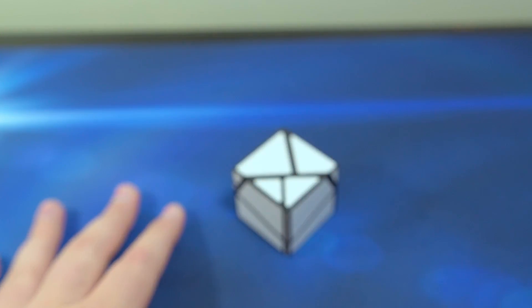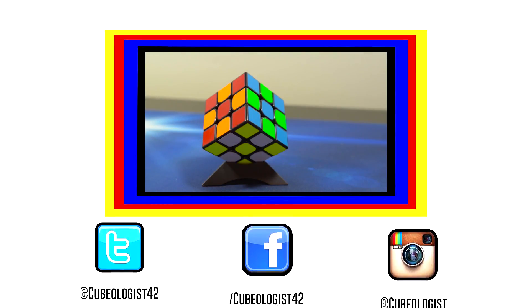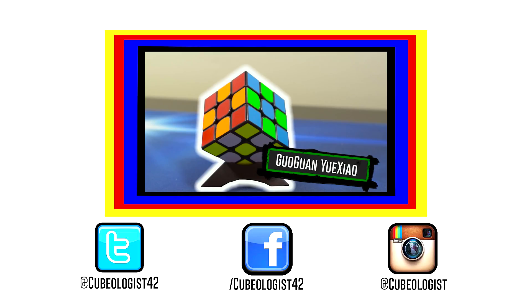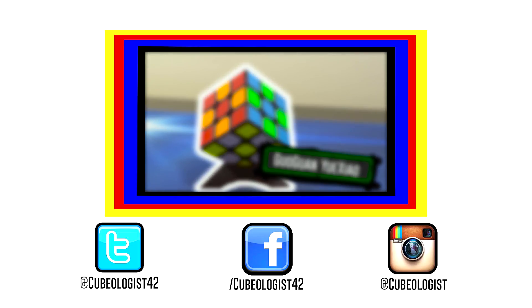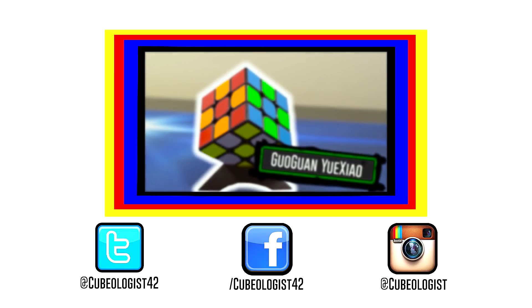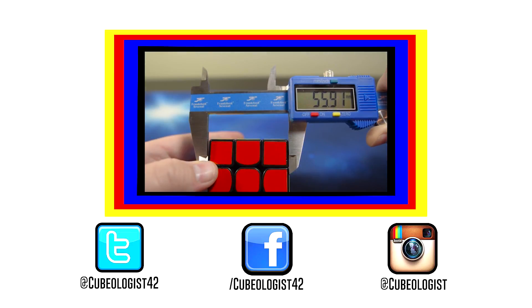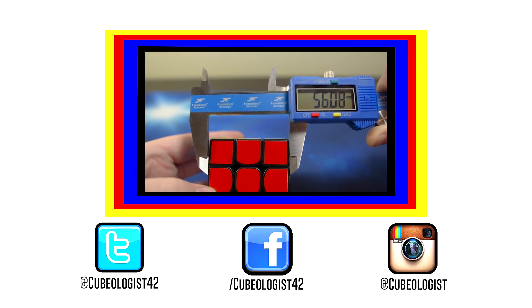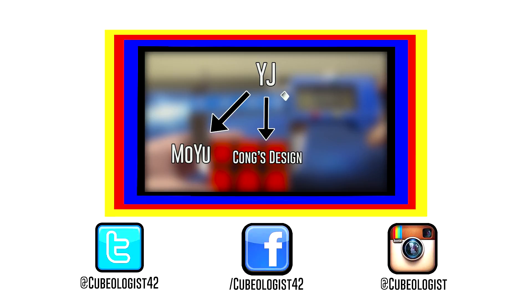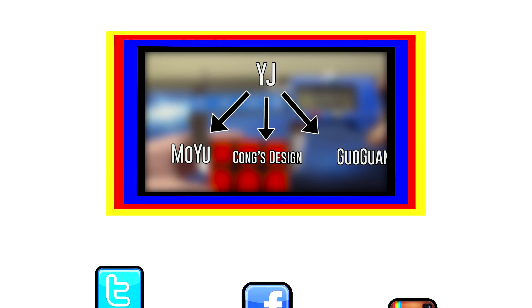Today we're going to be talking about the new Guoguan Yuishiao. But first, a big thank you to Cubes for Speed for sending this over. If you want your puzzles at a good price with extremely fast shipping, definitely go check them out. This is a new 56 millimeter 3x3 produced by YJ and released under the brand name Guoguan. That puts them on the same level as other YJ brands like Moyu and Kong's Design, so hopefully we can expect more puzzles under this name in the future.